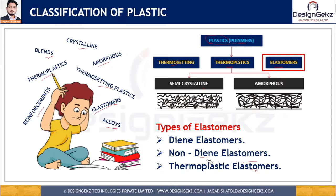Elastomers can be classified into diene elastomers, non-diene elastomers, and thermoplastic elastomers. Diene elastomers are polymerized from monomers containing two sequential double bonds, such as polyisoprene, polybutadiene, and polychloroprene. Non-diene elastomers include butyl rubber, polyisobutylene, silicone rubber, polyurethane (spandex), and fluoroelastomers. Non-diene elastomers have no double bonds in their structure, so cross-linking requires methods other than vulcanization — such as addition of trifunctional monomers via condensation polymerization, or divinyl monomers via free radical polymerization.